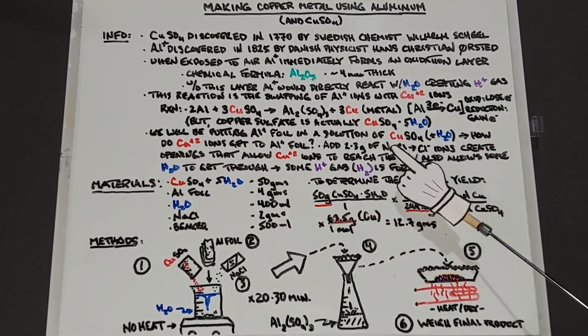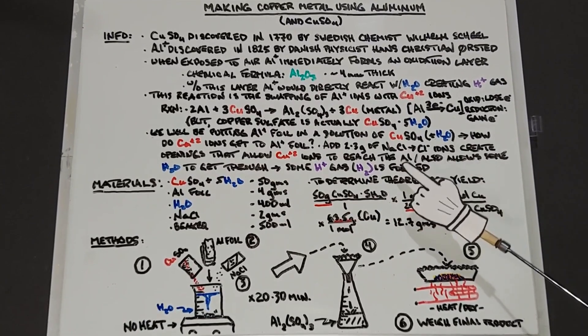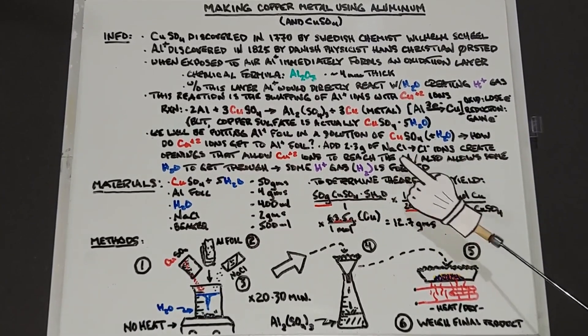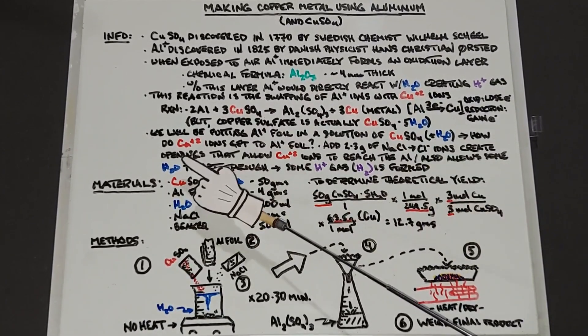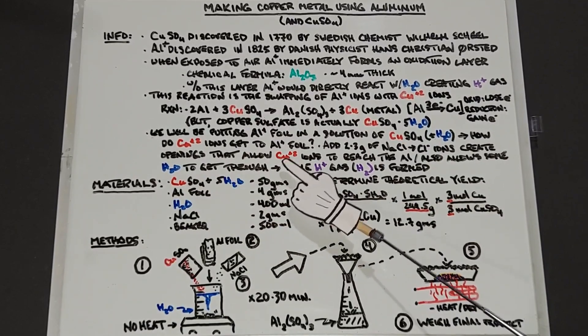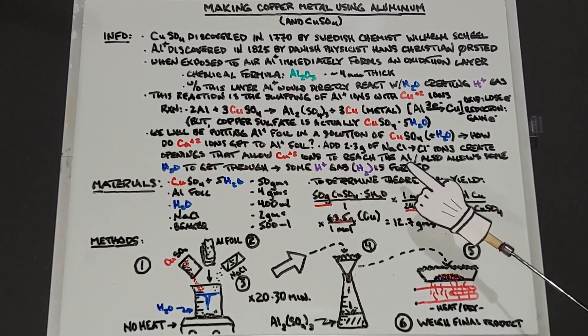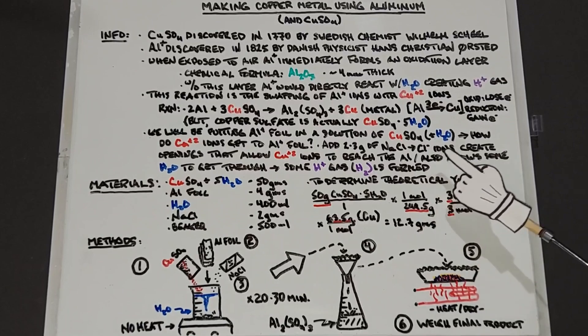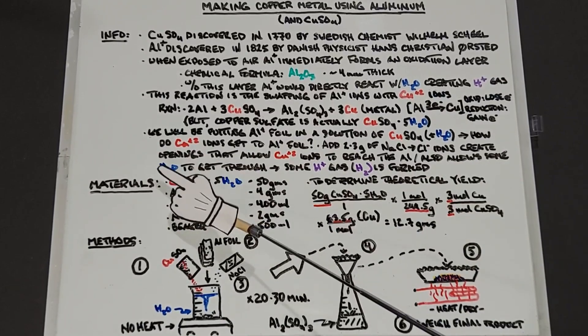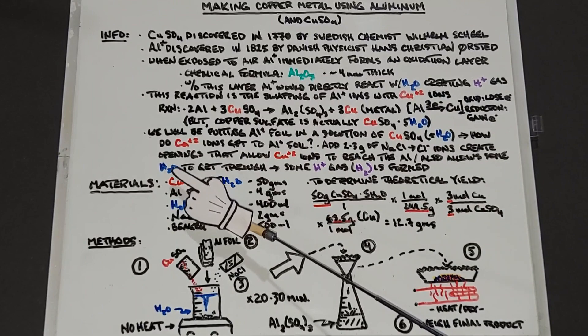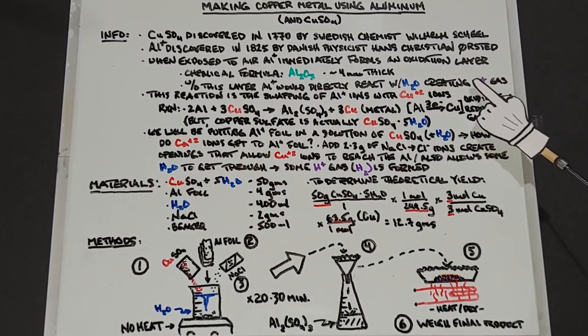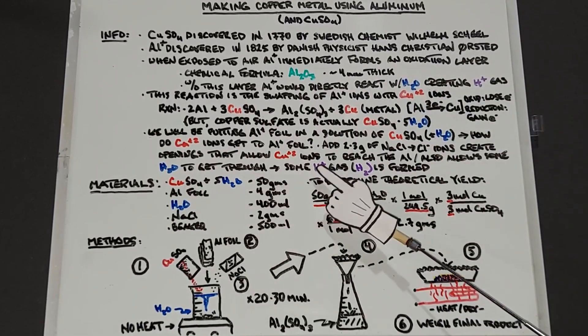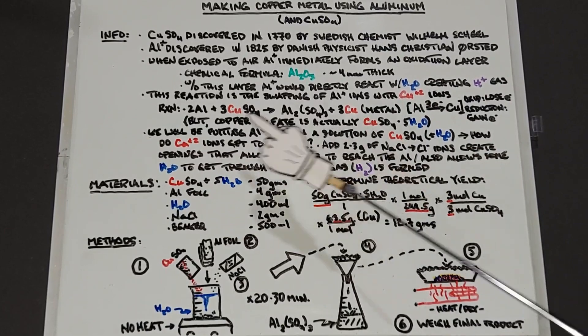We solve this by adding two to three grams, a very small amount, of sodium chloride. It's not understood exactly how this happens, but the chlorine ions create openings that allow the copper ions to reach the aluminum and do their electron swap. It also allows some water to get through, and the water will be touching the pure aluminum which creates hydrogen gas, so we will see some hydrogen gas bubbles form.